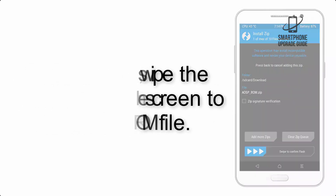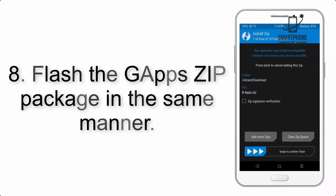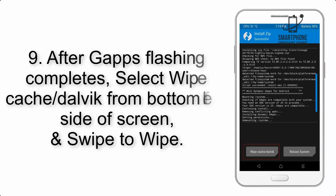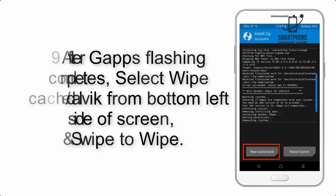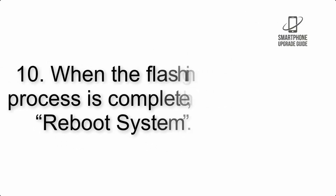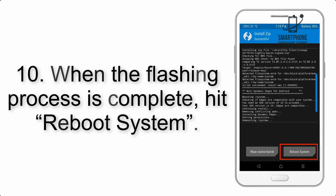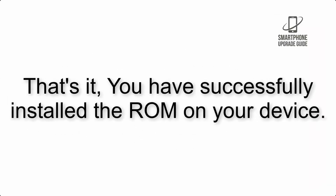Step 7: Swipe the button on the screen to install the ROM file. Step 8: Flash the GApps zip package in the same manner. Step 9: After GApps flashing completes, select Wipe Cache and Dalvik from the bottom left side of the screen and swipe to wipe. Step 10: When the flashing process is complete, hit Reboot System. That's it — you have successfully installed the ROM on your device.